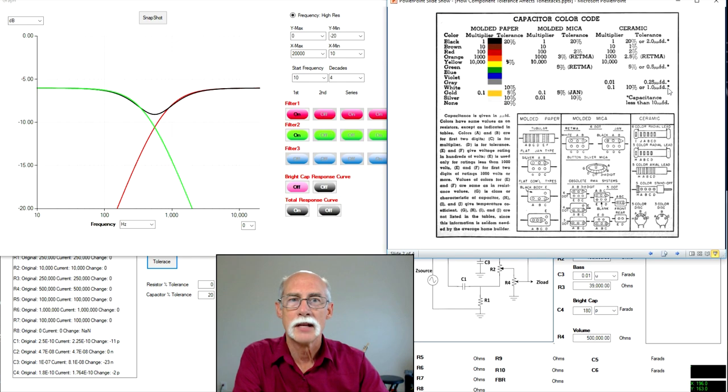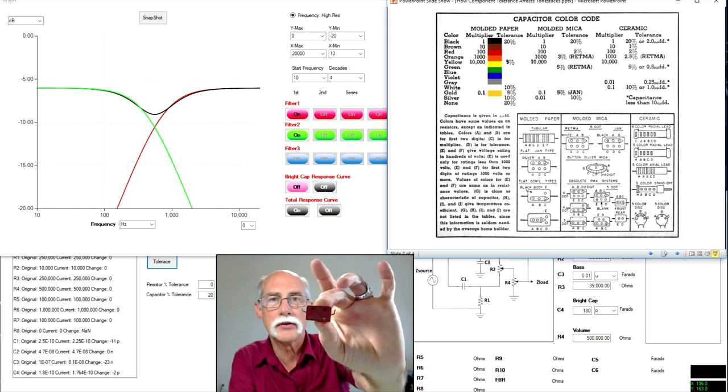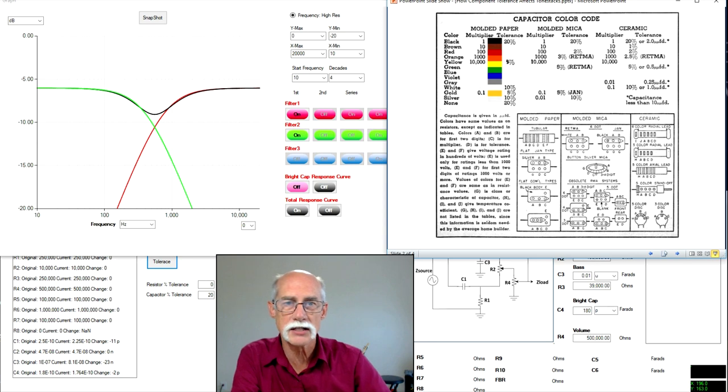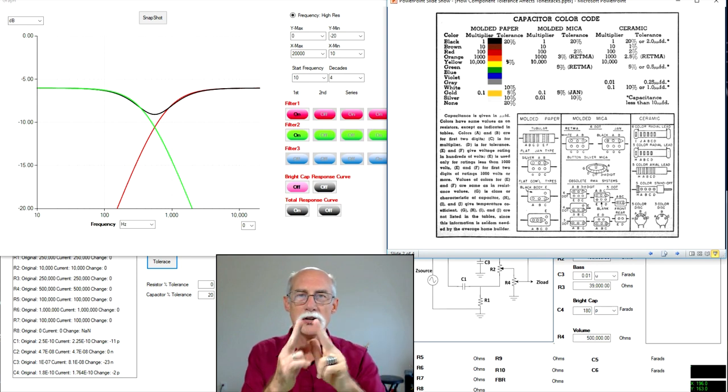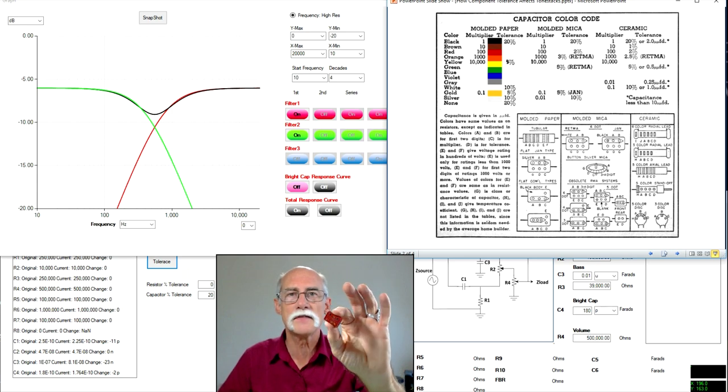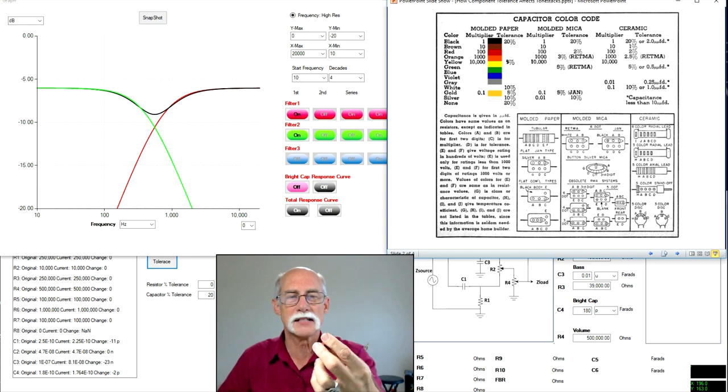Way back when, when they started making capacitors looking like this, they color-coded them. Resistors and capacitors looked pretty much like you see on screen here. They both looked the same. The only way you could tell the difference between a resistor and a capacitor was the number of bands. That's the first tip off. And then when you measured across that, if you weren't measuring resistance, it was a capacitor. Otherwise they pretty much looked the same. So they color-coded. The color codes for a capacitor and a resistor are the same. Back when they were manufacturing these, and this is a 50 picofarad capacitor, and it operates at several thousand volts.